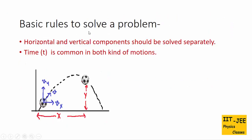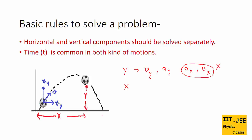Here are the basic rules to solve a problem. The first rule is that horizontal and vertical components should be solved separately. That means if you are solving vertical displacement y, then you can use only vertical components of velocity and acceleration — you cannot use horizontal components like ax or vx. Same way, if you are solving for horizontal displacement x, then you can use only horizontal components of velocity and acceleration. You cannot use any vertical components vy or ay.